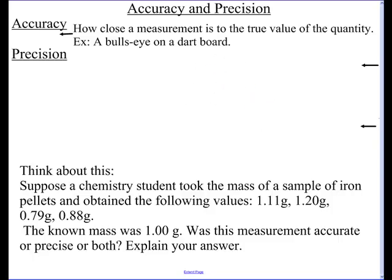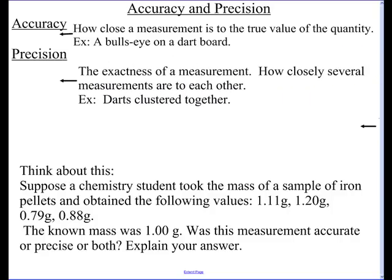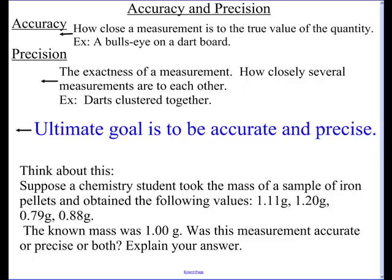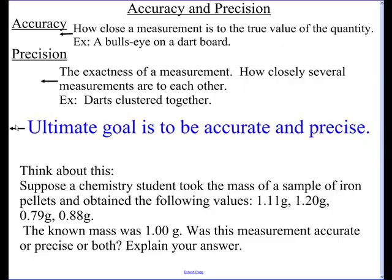So then the next thing would be this precision number. And this is something you might not be familiar with, but being precise means that when you make measurements, they are all close together. The official definition is the exactness of a measurement. So let's say I am still throwing at the dartboard and all three of my darts are really close together. Now it would be great if they are at the bullseye, but maybe they're more near the three. Because ultimately in chemistry, what we want to be is both accurate and precise.